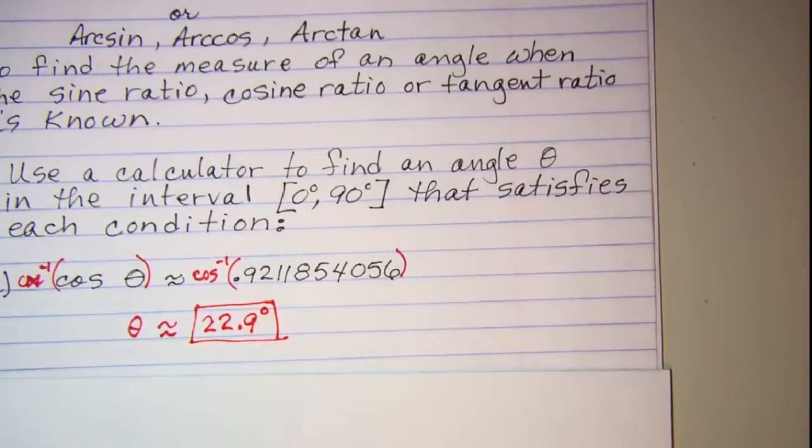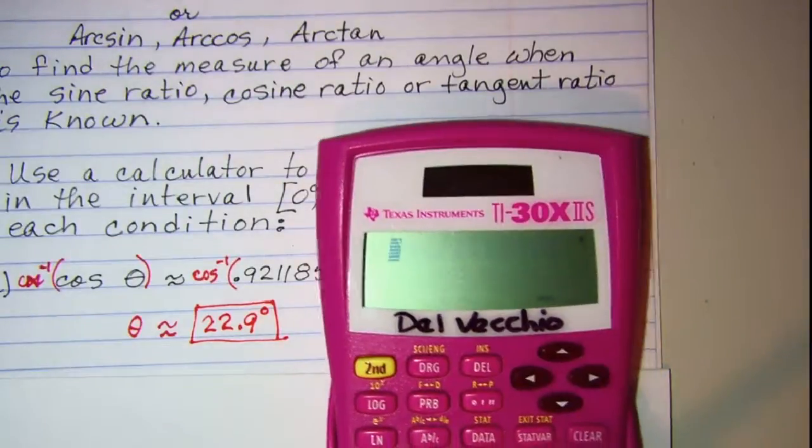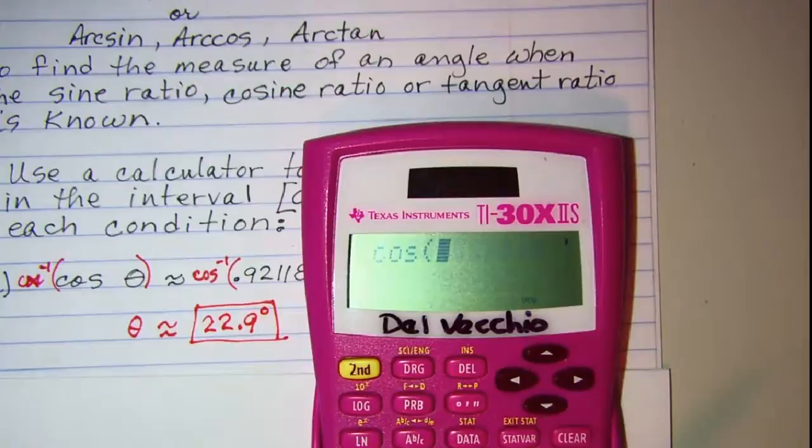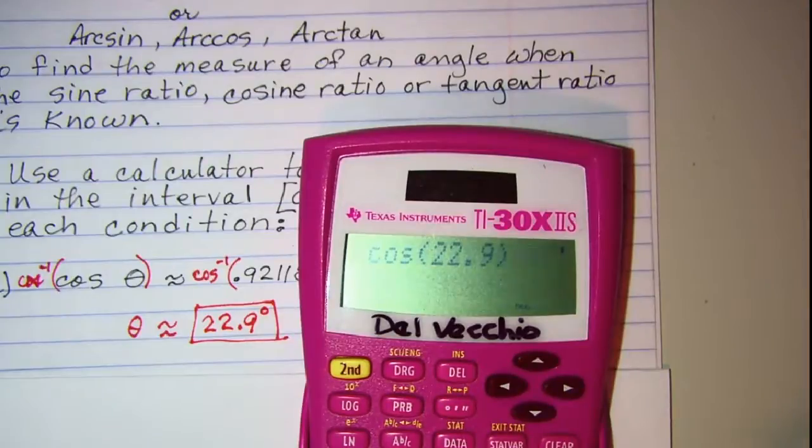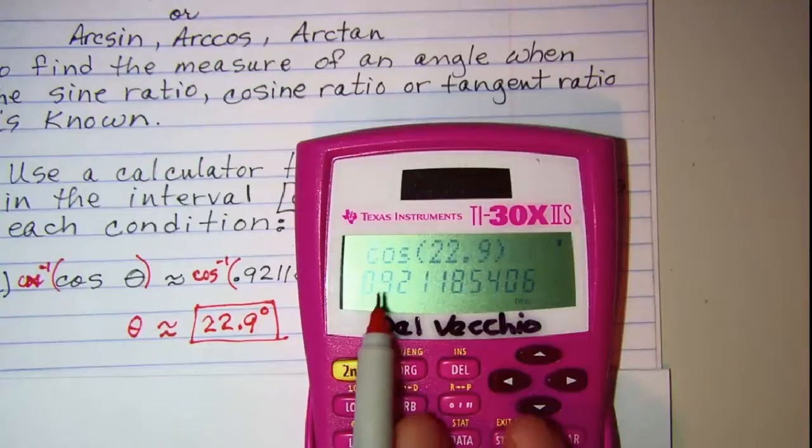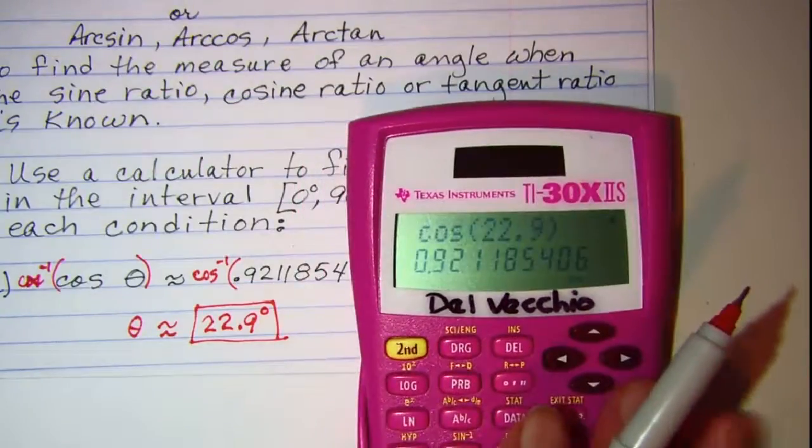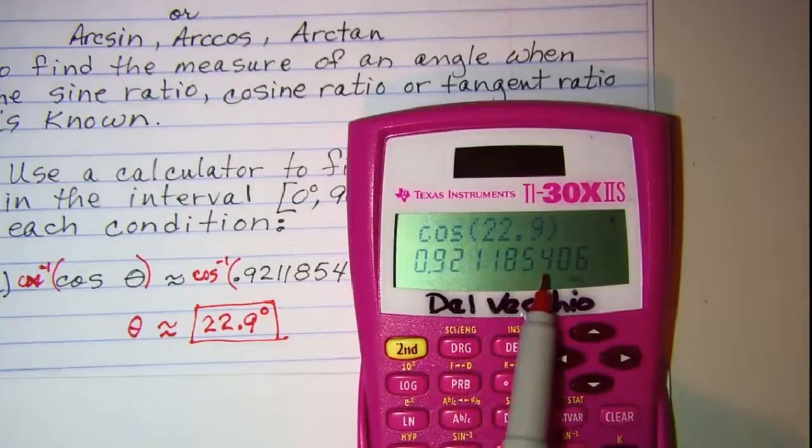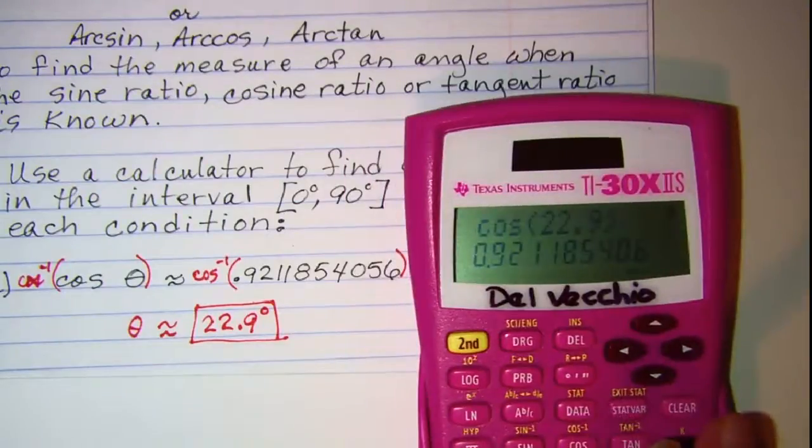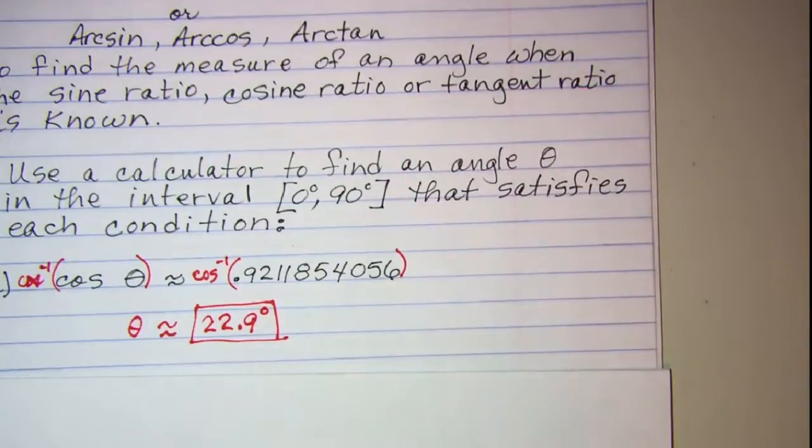Now you could check yourself by actually doing the cosine of 22.9, keeping in mind that there will be some rounding error, but we can see when we have cosine 22.9 that we do get 0.921185406. So that checks pretty close.